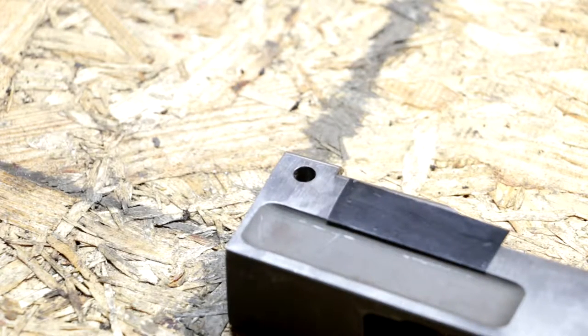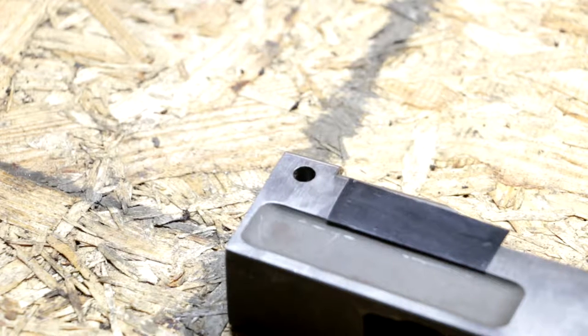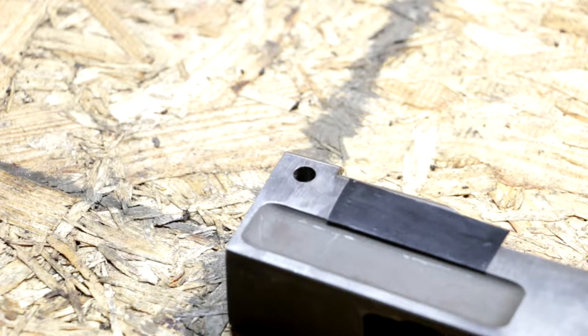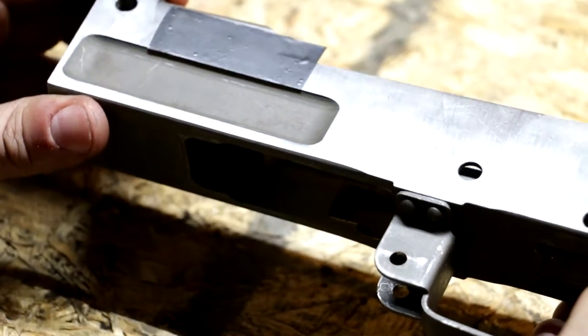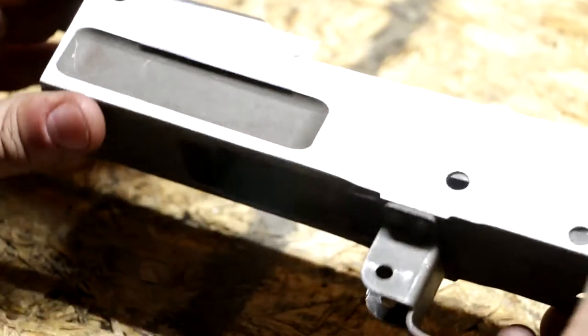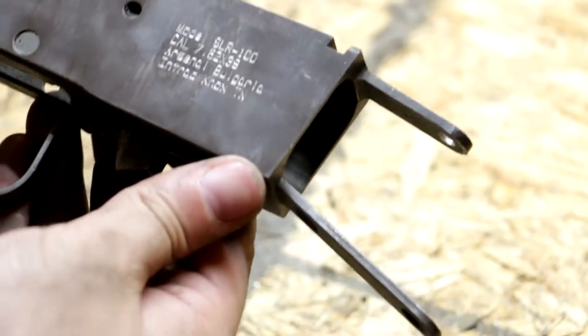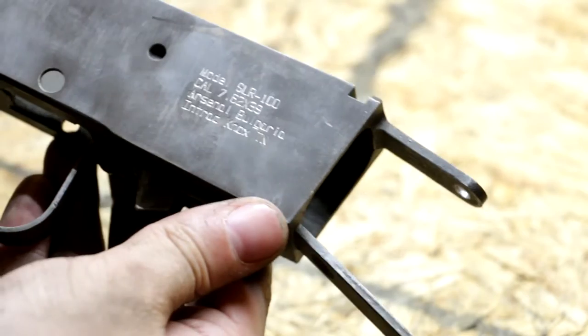Okay, now that we have an understanding of the different types of stencils for this process, we're gonna go ahead and prep this Bulgarian milled receiver. This is an SLR 100 receiver made in Bulgaria.